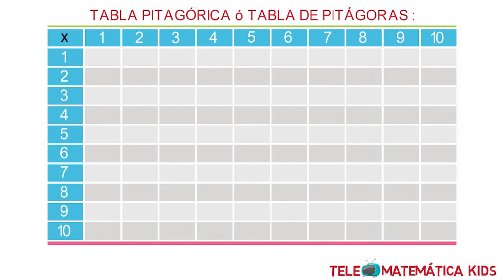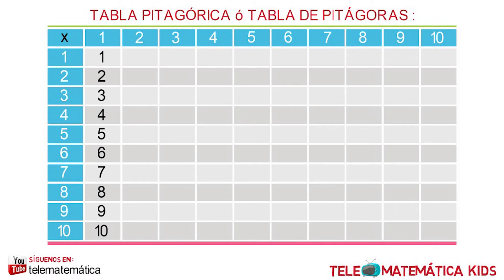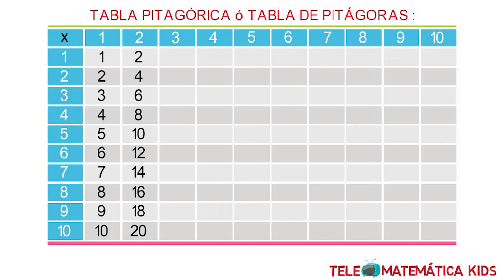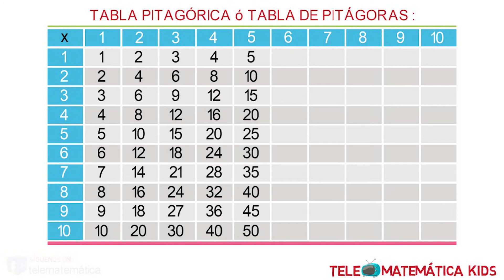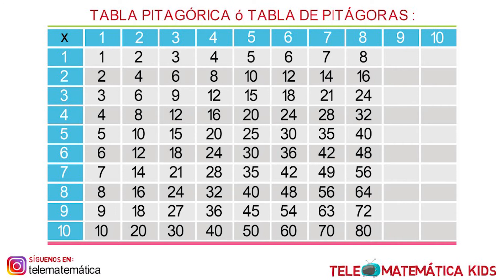In the next column you find the results of the table of 1, which are obtained by adding one unit at a time. In the next column you find the results of the table of 2, obtained by adding two units at a time. In the next column you find the results of the table of 3, obtained by adding three units at a time, and so the remaining values are obtained in the subsequent columns.